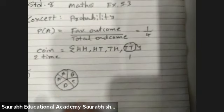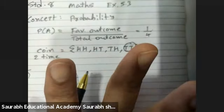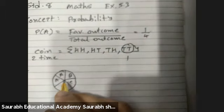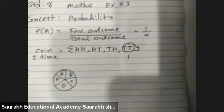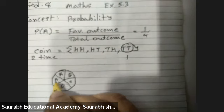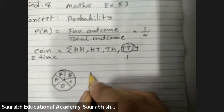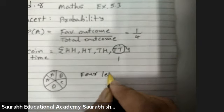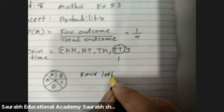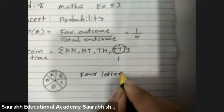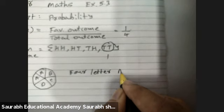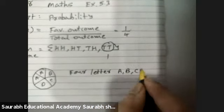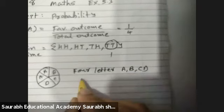For spinning a wheel, there are four letters: A, A, B, C, and D. So four outcomes.